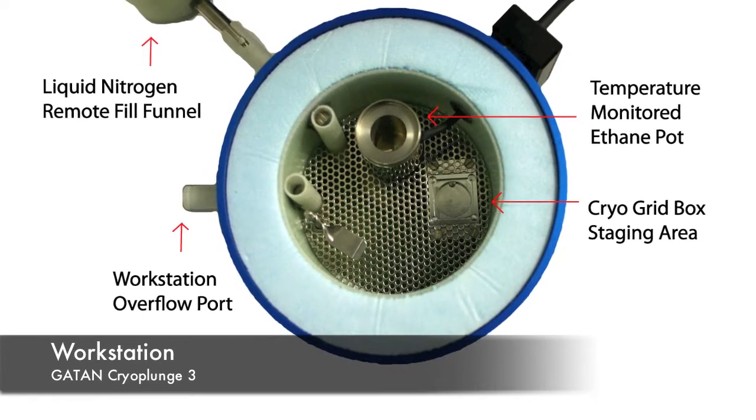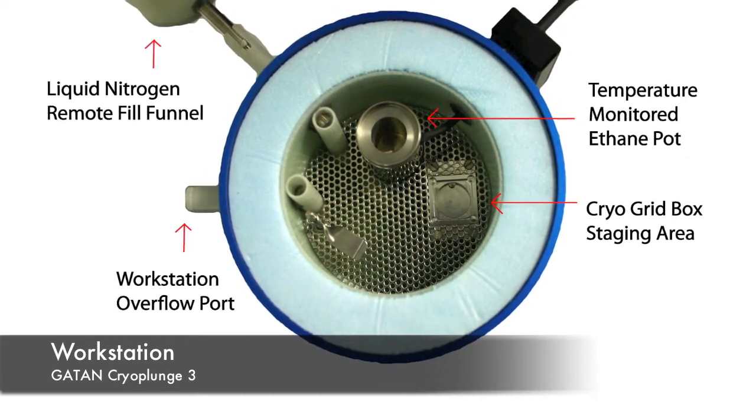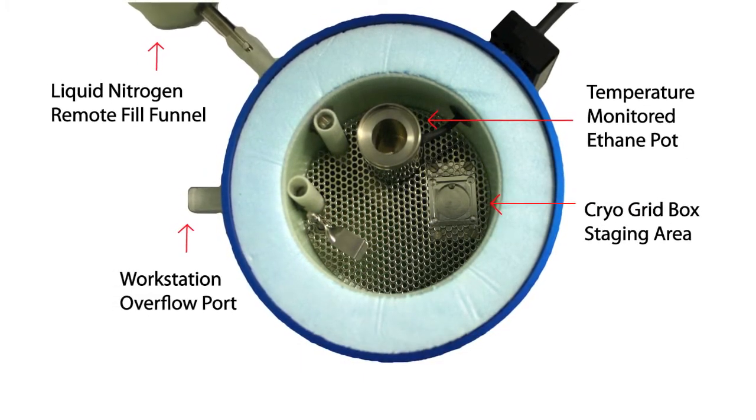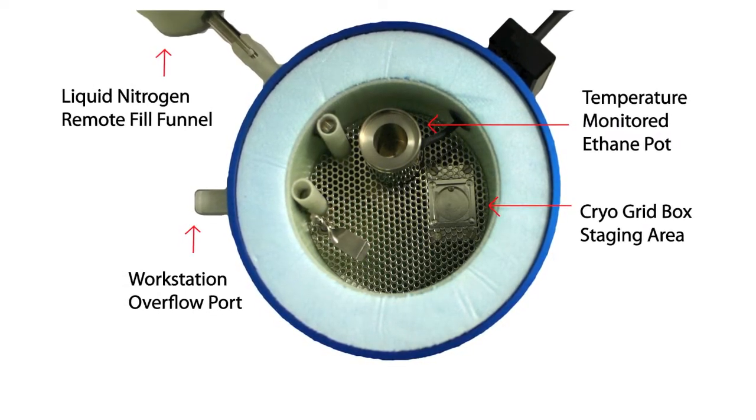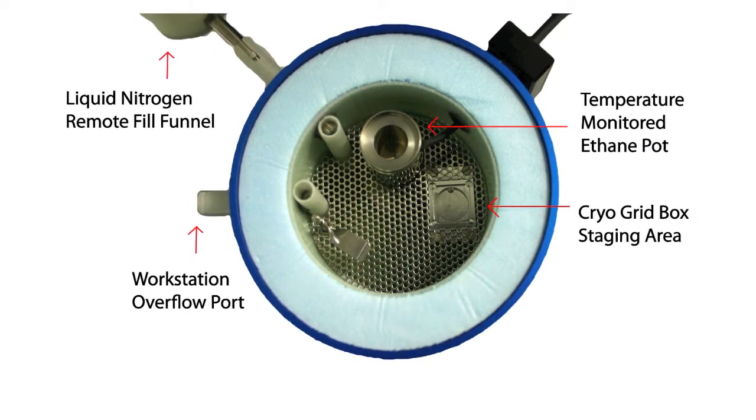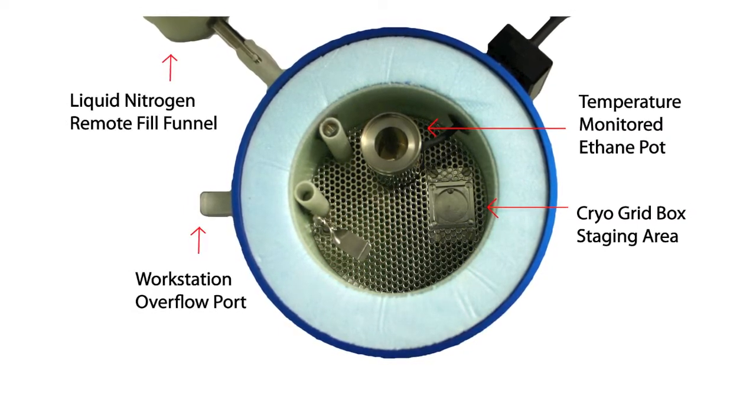A removable cryogenic workstation is located at the bottom of the cryo plunger. It contains a temperature monitored ethane pot, a liquid nitrogen remote fill tunnel, a workstation overflow port, and a cryo-grade box staging area.